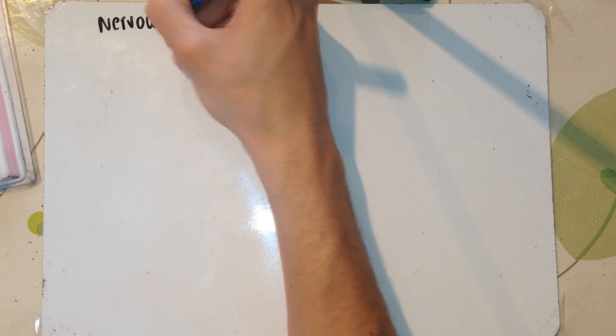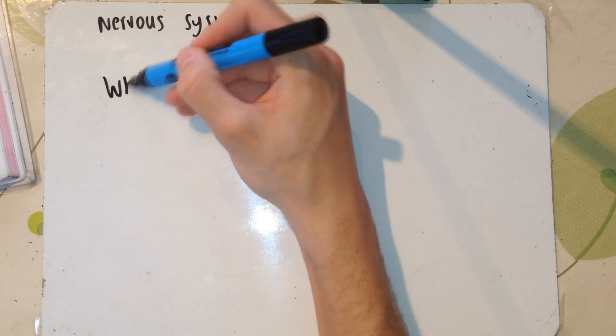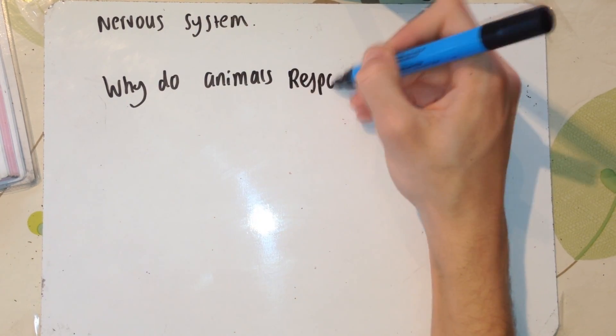In this video, we're going to be talking about the nervous system and the organization of it: sympathetic, parasympathetic, autonomic, somatic, all that jazz. So stay tuned.